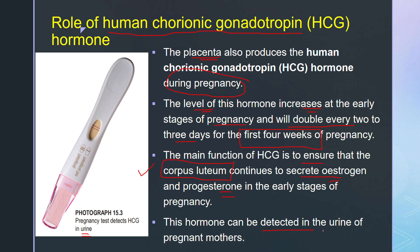This hormone can be detected in the urine of pregnant mothers. When pregnant mothers test their urine, they are testing whether HCG is present or not, indicated by lines. If there are two lines, that is an indication that the woman is pregnant. If there is a single line, HCG is not present in the urine and therefore indicates not pregnant.